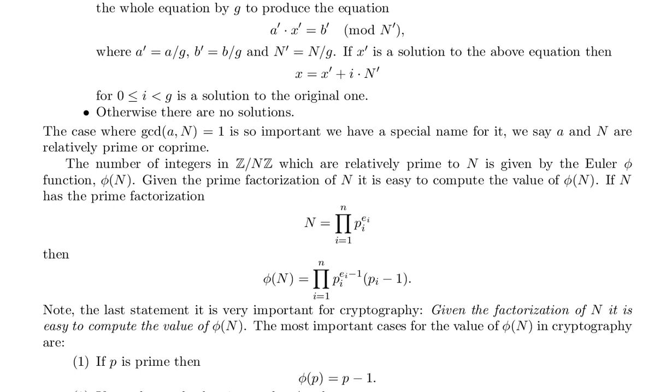Given the prime factorization of n, it is easy to compute the value of phi of n. If n has the prime factorization n is the product i equals 1 to n of p sub i to the e sub i. So this is the fundamental theorem, right? This is the product of primes.